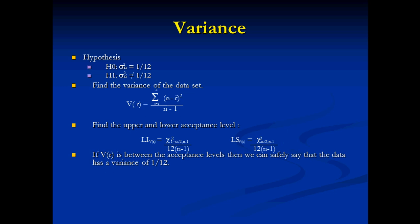The next test the random dataset needs to pass is the variance test, and it is very similar to the average test. First we establish a hypothesis that the variance is 1/12. We find the variance of the dataset using the corresponding formula.